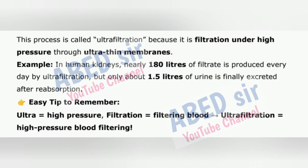Example: in human kidneys, nearly 180 litres of filtrate is produced every day by ultrafiltration, but only about 1.5 litres of urine is finally excreted after reabsorption. Easy tip: Ultra = high pressure; Filtration = filtering blood; Ultrafiltration = high-pressure blood filtering.